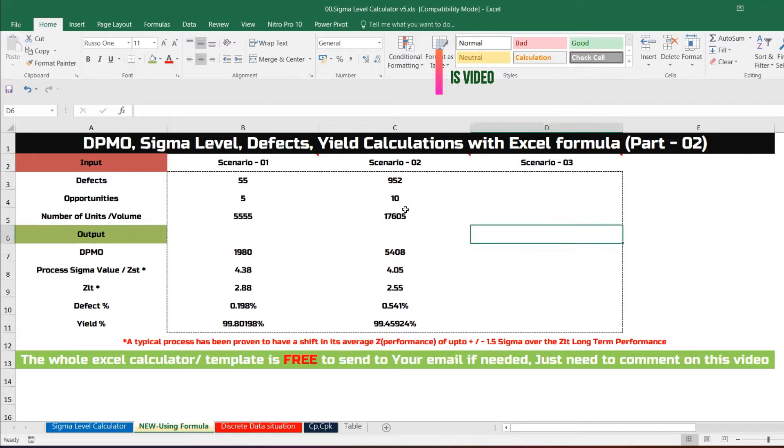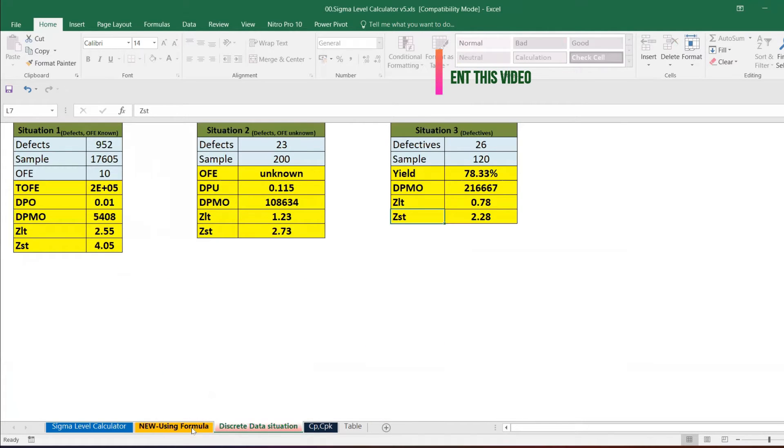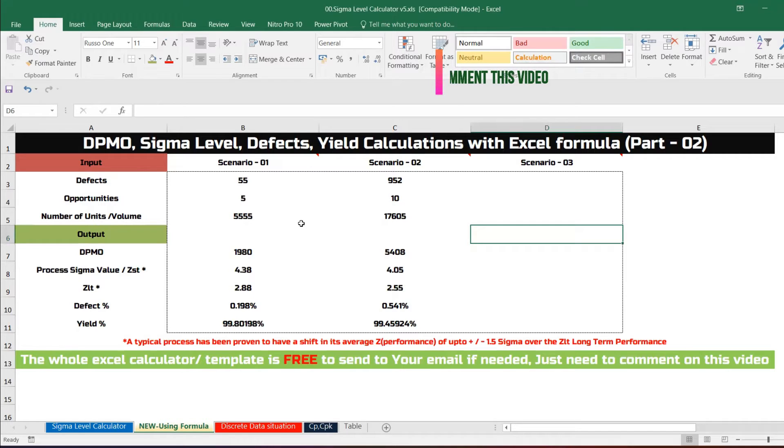The only difference between the last version and this version is in this version, version number five, has been invoked with the formula. For example, if you wanted to see any formula, you will be able to see the formula and what logic to it.